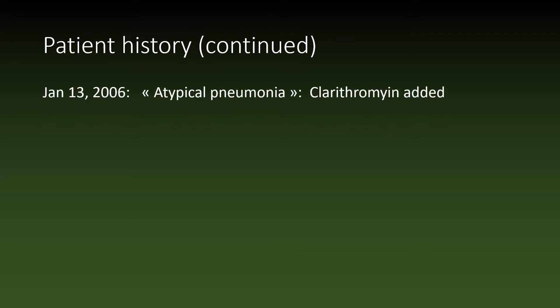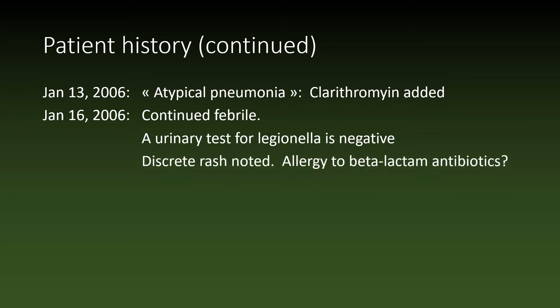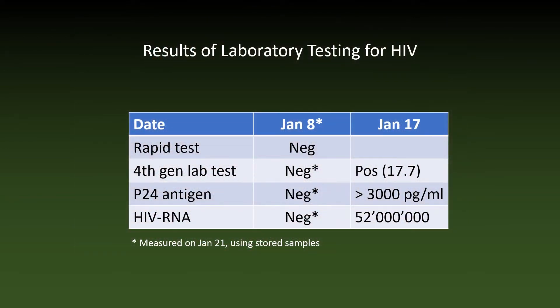After the chest x-ray and suspicion of pneumonia, clarithromycin was added to the antibiotic regimen. But until January 16, the fever did not abate. A urinary test for Legionella was negative. A discrete rash was noted and the question of allergy to the beta-lactam antibiotics he had received was raised. Additional history, however, revealed that he had had a homosexual contact on December 31st and had a negative rapid HIV test on January 8th. The rash as it appeared on January 17th, 2006 is shown here.